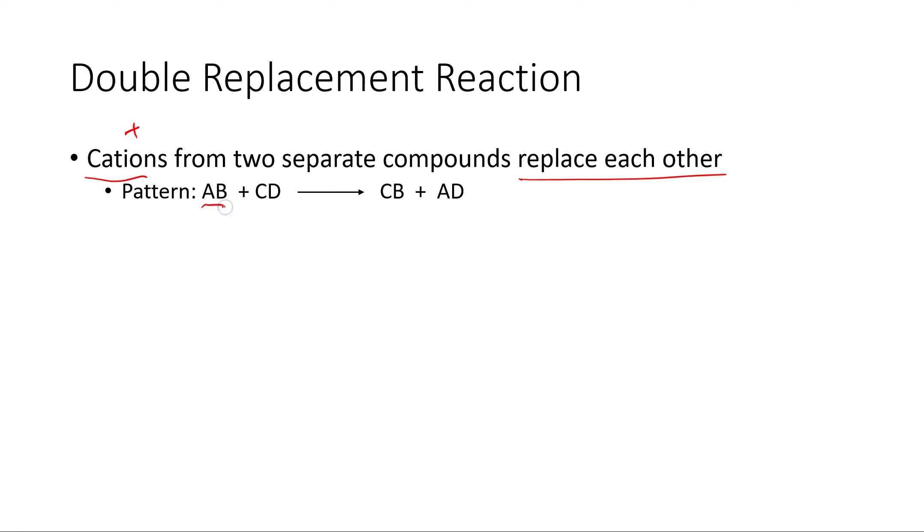Now double replacement reaction is similar to a single replacement, except there's no single element. There's two compounds. And so basically, the cations replace each other. The cation, the positive ion, in this case, they essentially just switch places in their compounds. So in this case, if I have compound AB bonded together, and then C and D are bonded together, the cations would essentially switch places. So the A and the C become CB and AD.